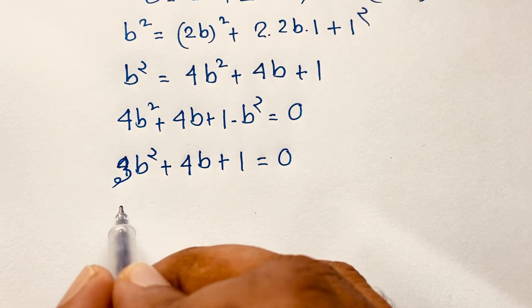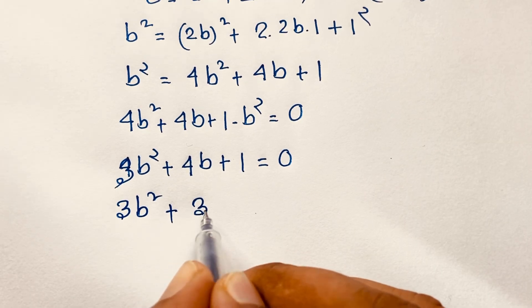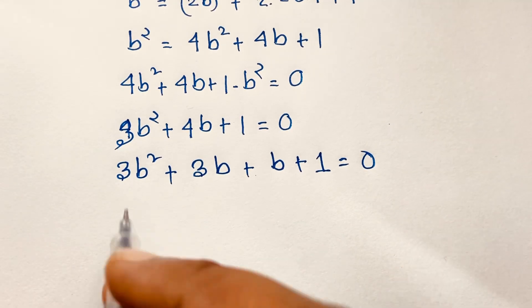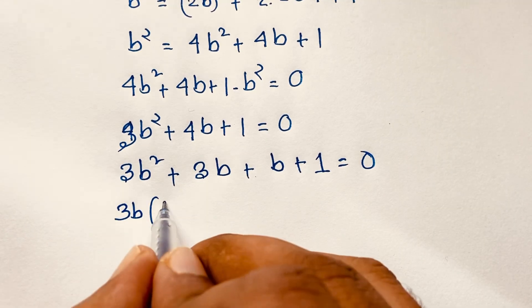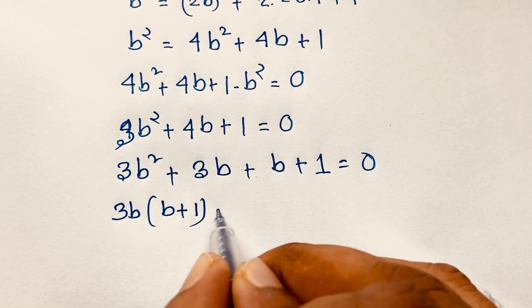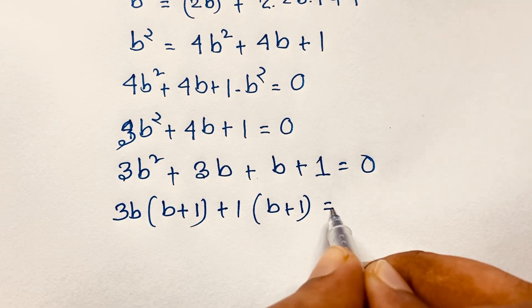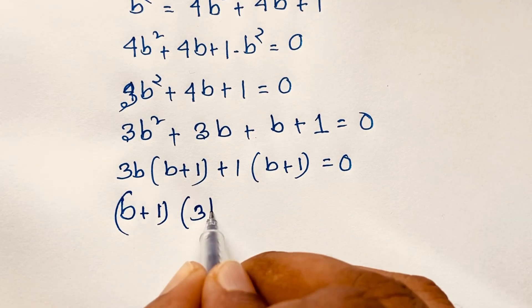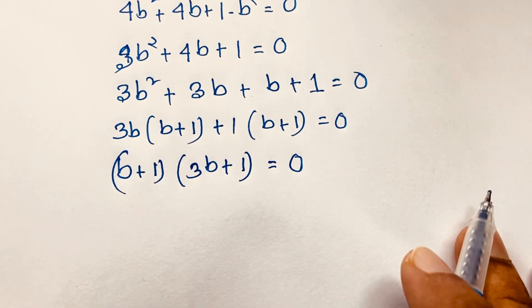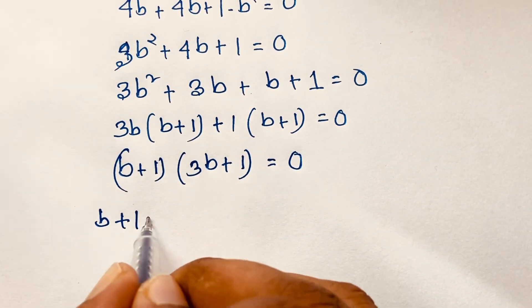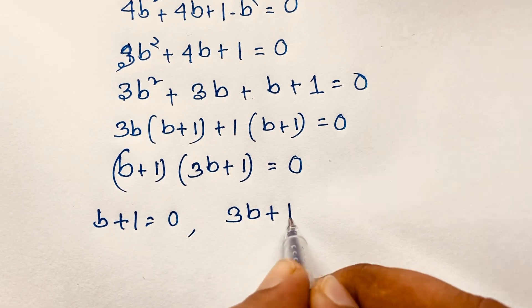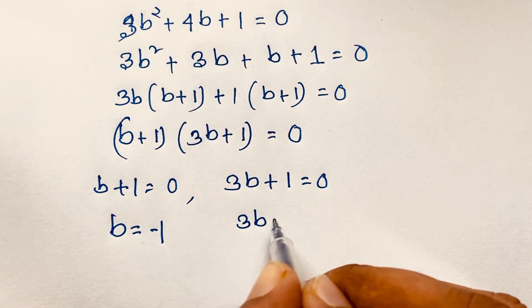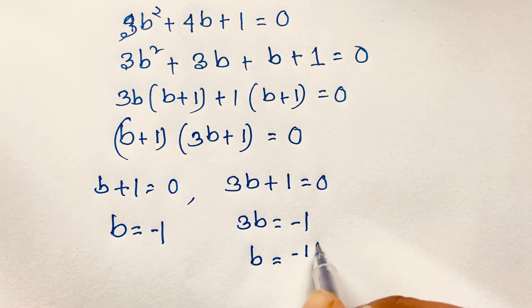Now I factor this quadratic: 3b² + 3b + b + 1 = 0. Taking 3b as common from the first two terms gives 3b(b + 1), and taking 1 as common from the last two gives 1(b + 1). So (b + 1)(3b + 1) = 0, giving us two cases: b + 1 = 0, so b = −1; or 3b + 1 = 0, so b = −1/3.